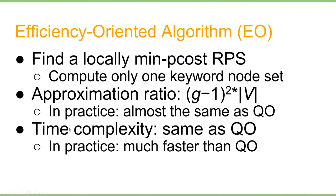Now we deal with the running time of QO. Recall QO needs to invoke find-RPS n times, which is the bottleneck of the algorithm. To speed it up, one possible way is to perform fewer find-RPS calls; another is to make find-RPS faster. In the Efficiency-Oriented algorithm (EO), we find a locally minimum p-cost RPS for one keyword node set. If EO performs fewer find-RPS calls, the approximation ratio becomes (G-1) squared times V, which is unacceptable. But in practice it's almost as good as QO. In terms of time complexity it's the same as QO, which is also theoretically unacceptable, but in practice it's much faster because it performs fewer find-RPS calls.